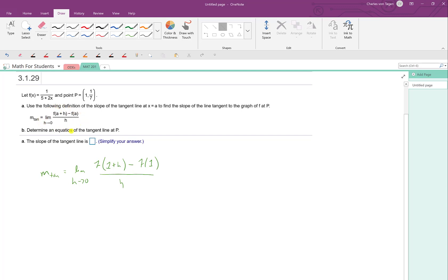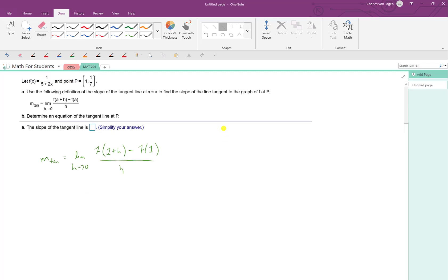But I would encourage you to, when you get a chance, try the alternate definition for the slope of the tangent line because I think things will work out a little bit easier in that case. Just the algebra is a little bit easier than it is for this version of the definition.